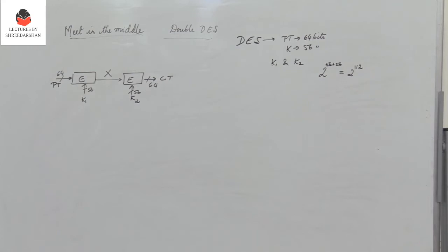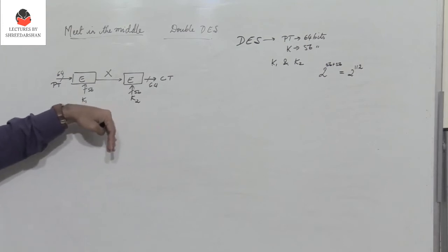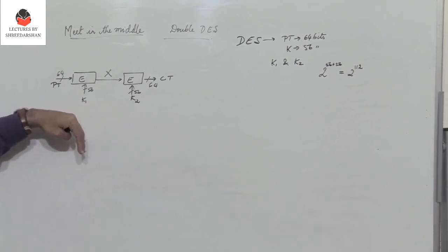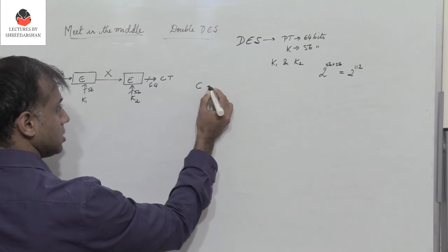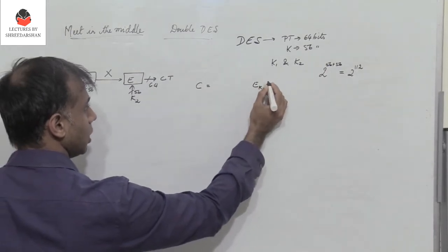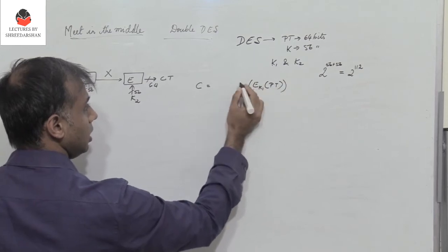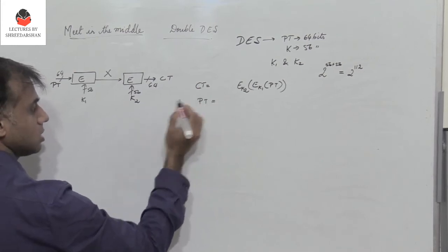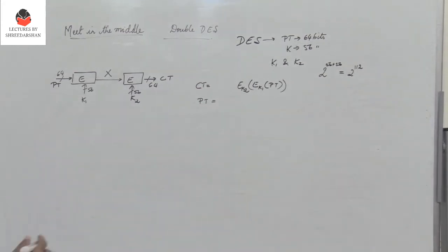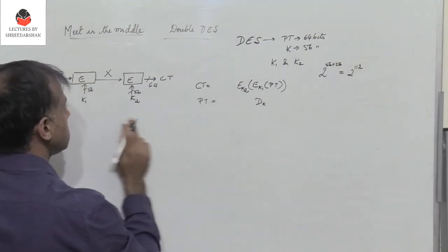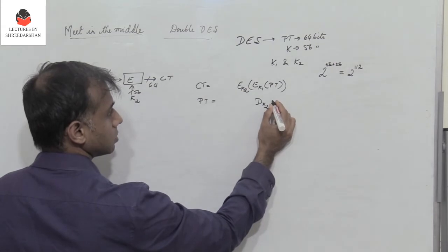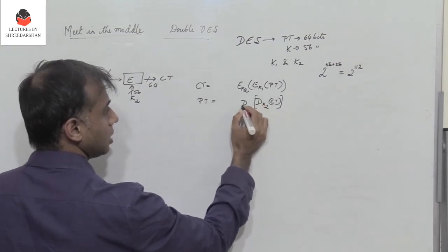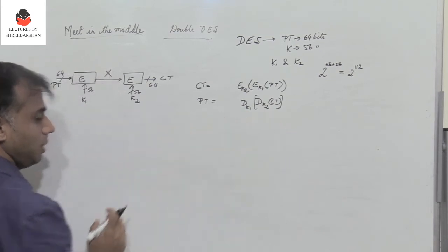The plain text is 64 bits, K1 is 56 bits, K2 is also 56 bits, and the ciphertext CT is 64 bits. The process of decryption is where the ciphertext is decrypted using K2 first, and then decrypted using K1 to get the plain text. So the plain text is encrypted using K1, and then encrypted using K2 to get the ciphertext CT. To recover the plain text, we decrypt the ciphertext first using K2, and then again using K1.